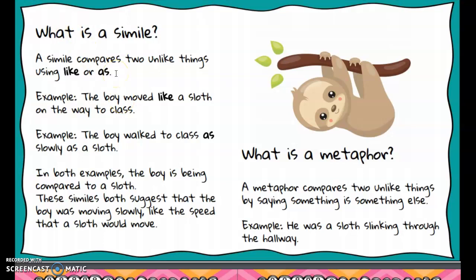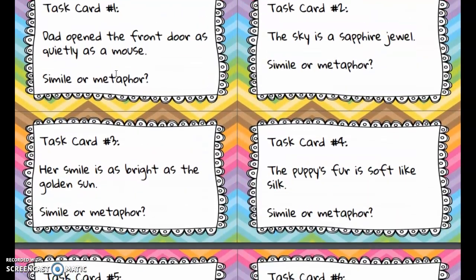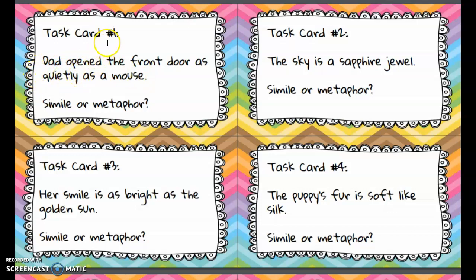Let's look at some more examples. Number one: dad opened the front door as quietly as a mouse. Here we're comparing dad opening the door to a mouse. The key word here is 'quietly,' meaning he's trying to do it without making noise.